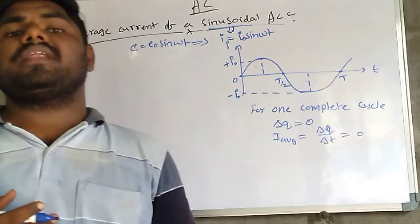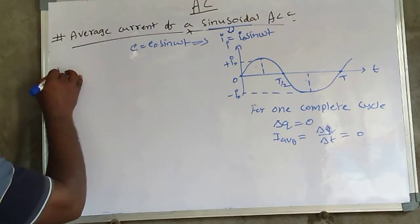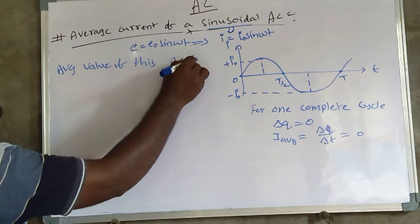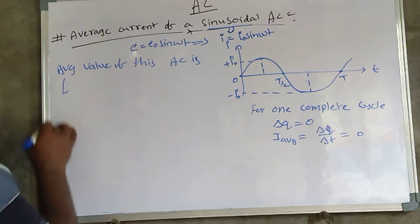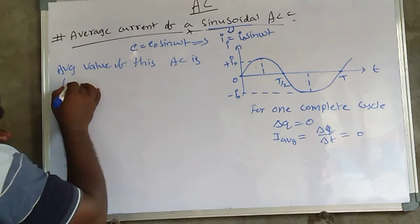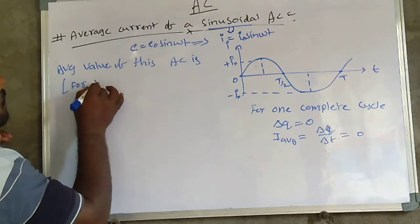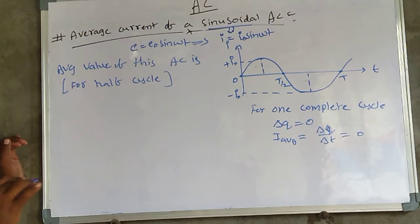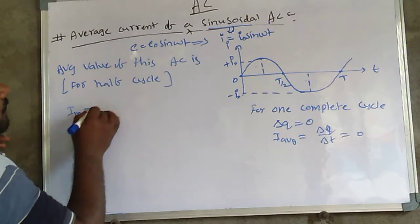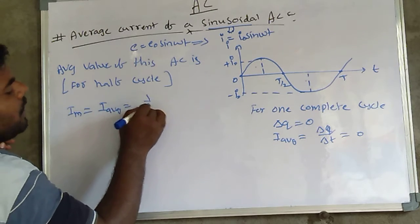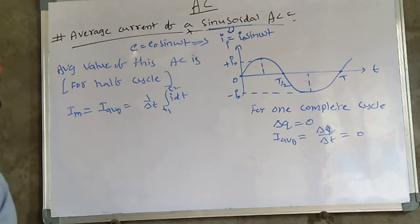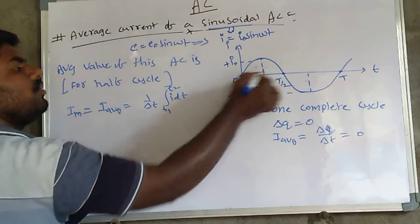So what happens for a half cycle? We are going to discuss the average value of this AC. The average value for a full cycle is zero, so we discuss it for a half cycle only. The mean value — which is the average value — is equal to one over delta t, times the integral of i dt from t₁ to t₂.